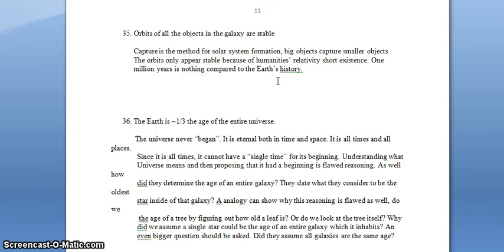Orbits of all the objects in the galaxy are stable. Capture is the method for solar system formation. Big objects capture smaller objects. The orbits only appear stable because of humanity's relatively short existence. One million years is nothing compared to the Earth's history.